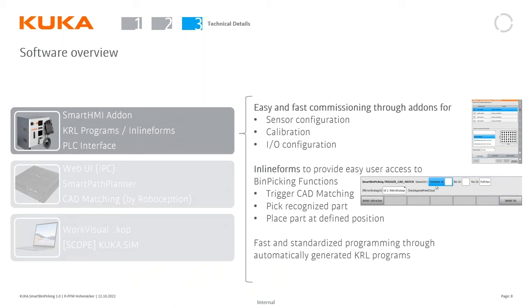Going a bit deeper: within the controller add-on, there's a Smart HMI add-on that allows for easier and faster commissioning. You can do sensor configuration, calibration, and IO configuration through here. We've also provided inline forms — you can do basic programming through KRL in WorkVisual, but you can also use these inline forms that make it very easy to trigger the necessary functions for Smart Bin Picking. All of the basic programming is generated inside the controller from the configurations you set up, so you're not programming anything from scratch.